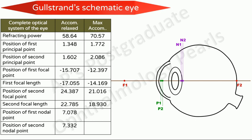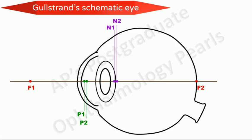Gullstrand has also given the cardinal points and parameters treating the eye as a whole as a single refracting surface of power equal to that of the entire eye. Note that the total refracting power of the eye is 58.64 diopters. Notice that the two nodal points straddle the posterior pole of the lens. The second focal point is 24 mm from the anterior corneal surface, that is in the position of the retina. This schematic eye by Gullstrand is termed Gullstrand's exact eye.